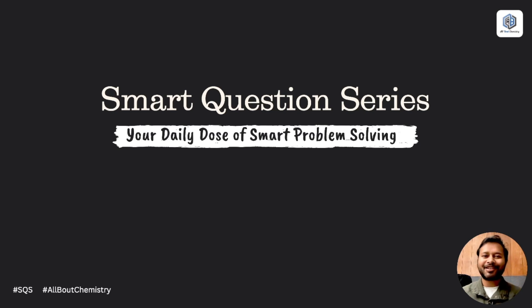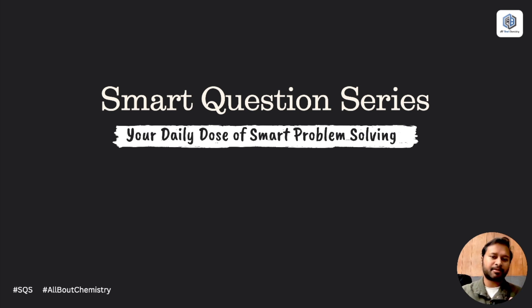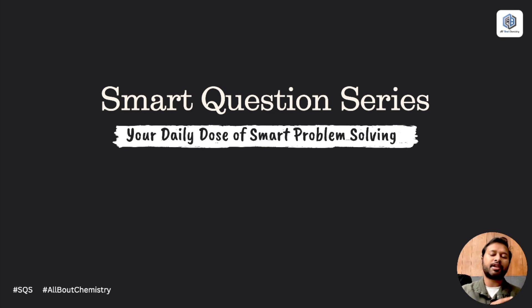Hello everyone and welcome to the channel — welcome to another video in the Smart Question Series, your daily dose of smart problem solving. We have already done two parts of this series, taking questions from quantum chemistry: one from the variational principle and expectation value of the Hamiltonian operator, and another from a commutator. These two questions were taken from the recent CSIR NET June 2024 exam.